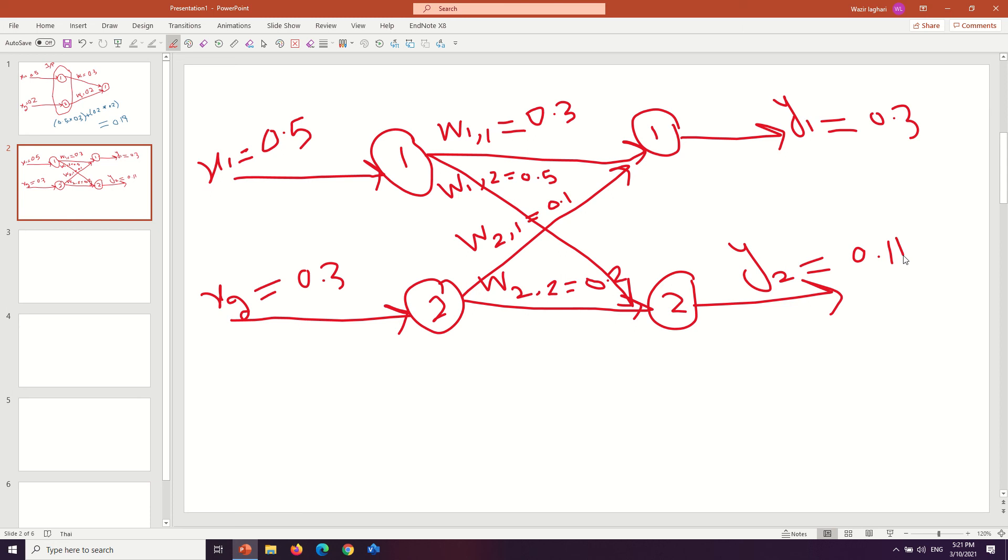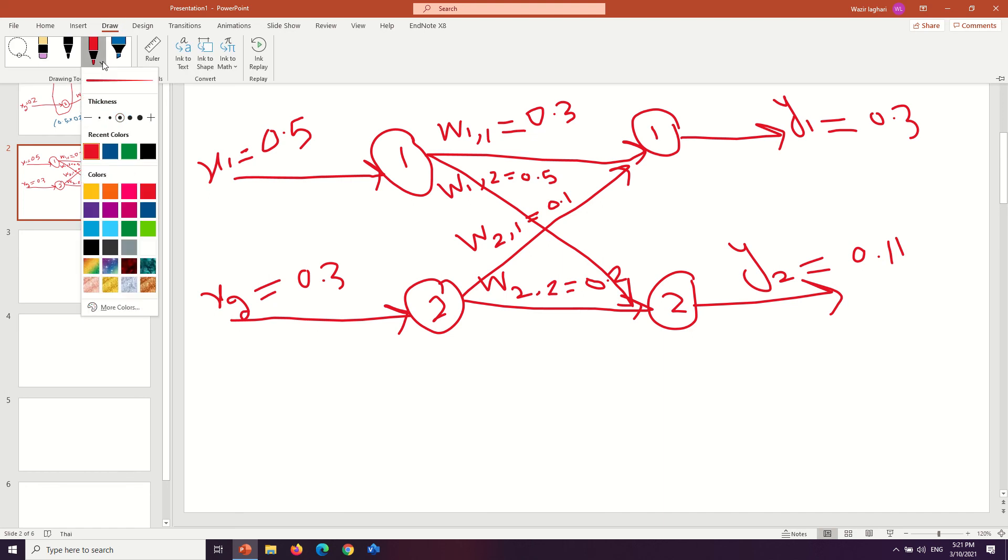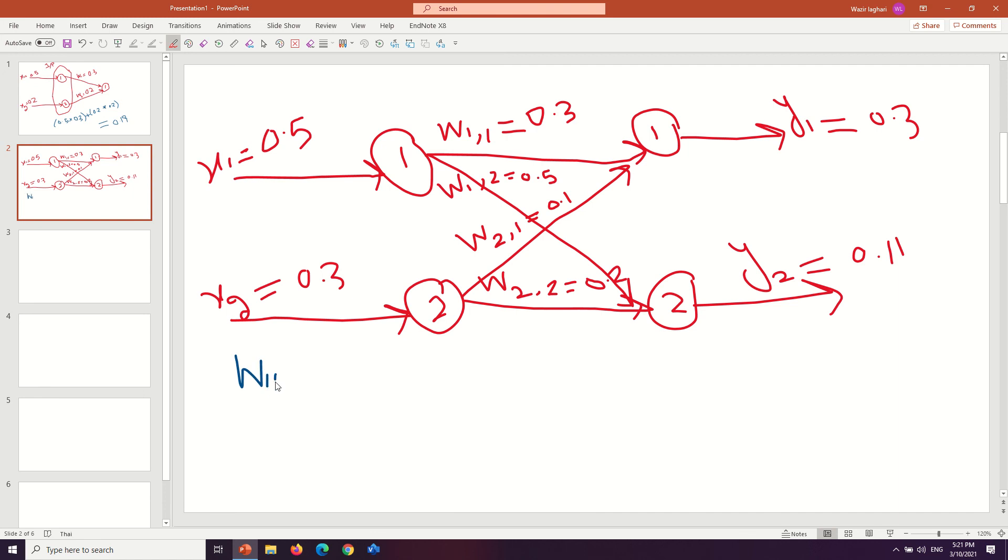So how can we solve this neural network? We use the help of matrices. With the help of matrices, we draw a matrix. This is called w1,1 and this is called w1,2, and the other is called w2,1 and the second one is called w2,2. So this is our matrix, combined in one box.